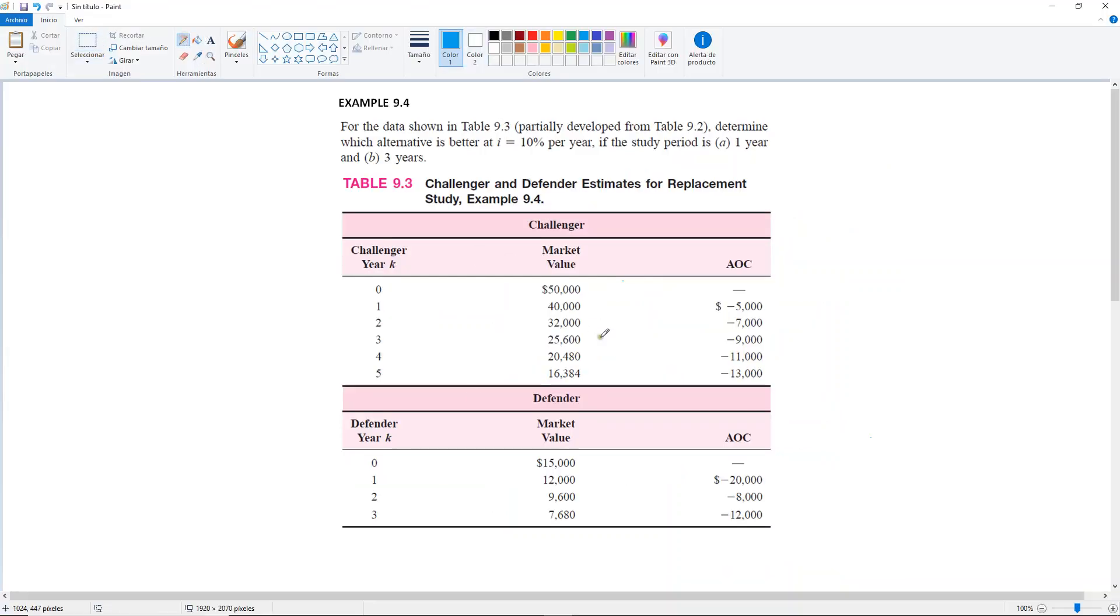So let's start with this. If you look at the table, you will notice that all of these estimates are from Example 9.3. So here we said that we had a gradient, and the annual operating cost for the Defender has no pattern.